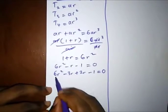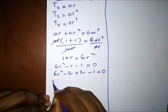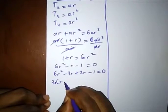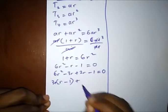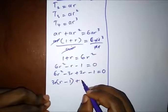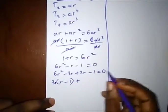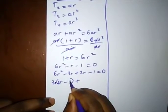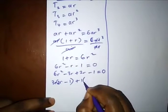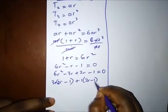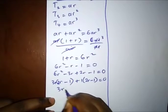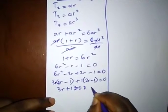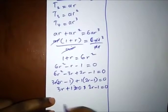So we have 6R² minus 3R plus 2R minus 1 equal to 0. Let's bring out the common terms. We have 3R bracket (2R minus 1) plus 1 bracket (2R minus 1) equal to 0. So we are left with 3R plus 1 equal to 0 and 2R minus 1 equal to 0.